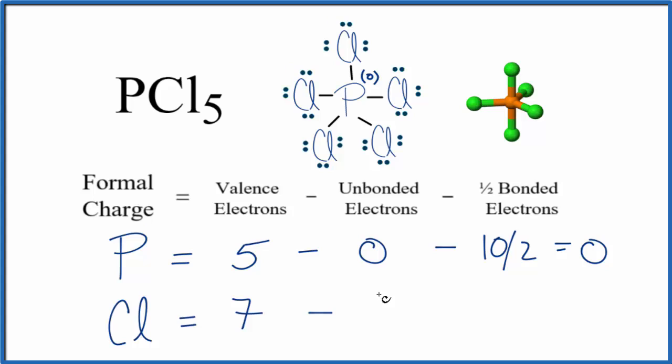For bonded electrons, we have just the two here in the chemical bond. Two over two is one. Seven minus six is one, and one minus one equals zero. So for each chlorine here we have a formal charge of zero.